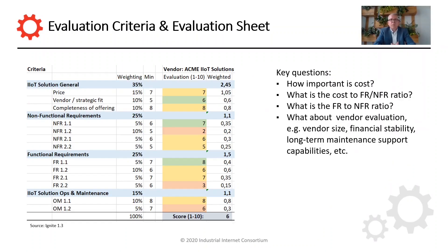All of this needs to be part of your RFP. But before you start creating your RFP, it's important to really understand how you are going to evaluate the different offers you're expecting from the vendors. A good step before going into the details of the RFP document is to look at this from a higher-level perspective and identify the top evaluation criteria. Here we're using a handy template as part of the Ignite methodology, which looks at a set of different criteria — for example, IoT general criteria, non-functional requirements, functional requirements, and requirements related to operations and maintenance of your IoT solutions. Typically, each of these criteria is assigned a weighting.